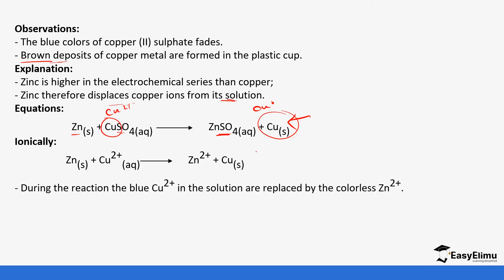So during the reaction, the blue copper ions in solution are replaced by the colorless zinc ions. So the blue color fades and brown deposits of copper metal are formed in the plastic cup.